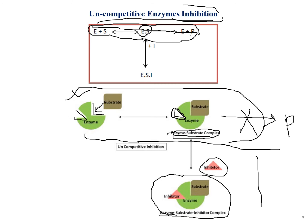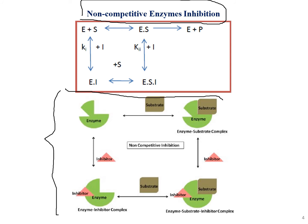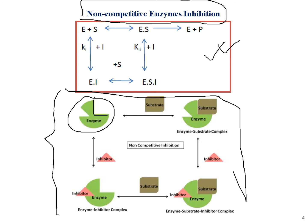That was the uncompetitive one. The last type is non-competitive enzyme inhibition, which is a bit more complex. Similar to the uncompetitive type, the enzyme has two occupancy sites — it can be occupied by two substrates, two inhibitors, or one substrate and one inhibitor. Let's first follow the path where the enzyme is occupied by the substrate to form an enzyme-substrate complex.